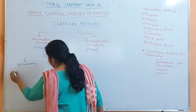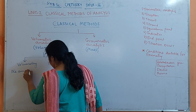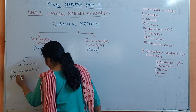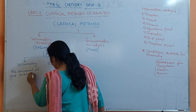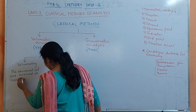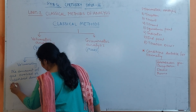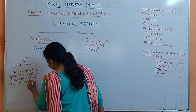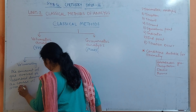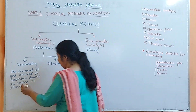In Volumetric Methods, we measure the amount of gas evolved or absorbed during the course of the reaction, and then this volume is correlated with the concentration of the species of interest.